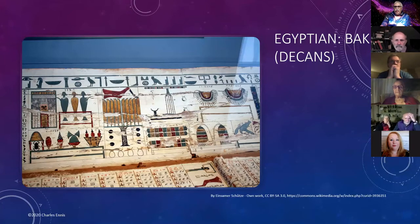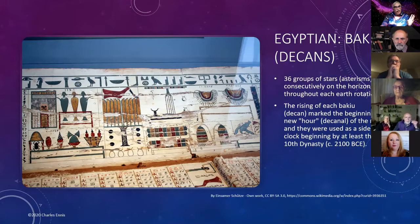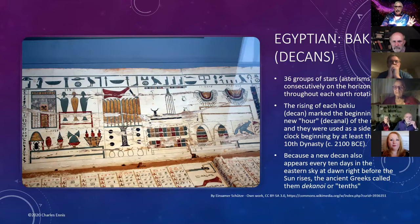A culture we do know about is the Egyptians. The Egyptians had Baku — which the Greeks called dekans — 36 groups of stars, asterisms not constellations, rising consecutively on the horizon throughout each Earth rotation. The rising of each Baku or dekan marked the beginning of a new hour. They were used as a sidereal clock beginning at least by the 9th or 10th dynasty — about 2100 BCE. Because a new dekan also appears every 10 days in the eastern sky at dawn, the ancient Greeks called them dekanoi, meaning 'tens.'